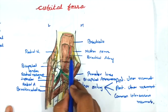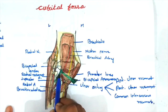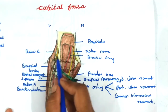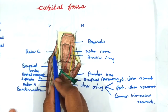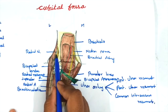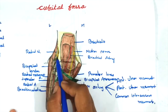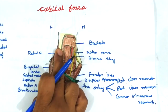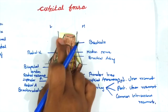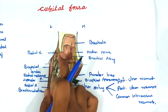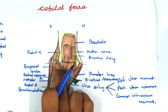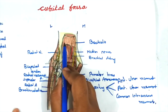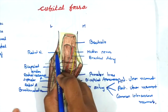Having completed the median nerve, brachial artery, and bicipital tendon, the fourth content is the radial nerve. The radial nerve is seen in the cubital fossa at its superior lateral angle. After coming from the radial groove, it winds around the lateral supracondylar ridge and enters the cubital fossa, where it lies between the brachialis and brachioradialis muscles.